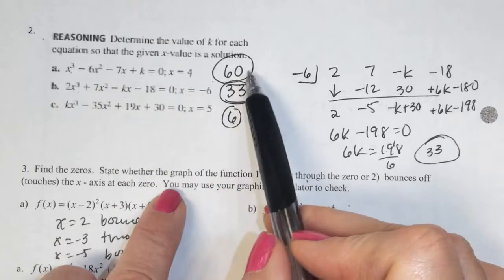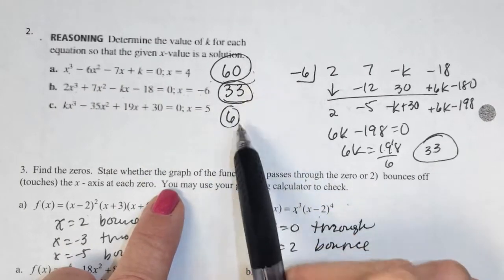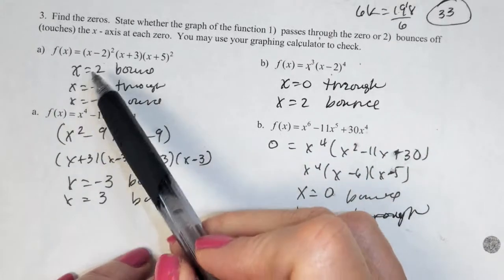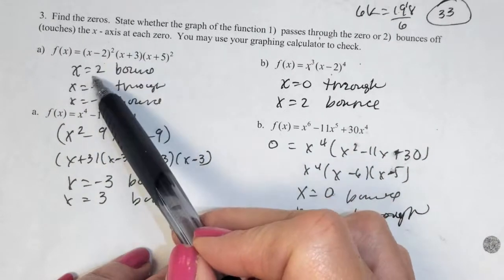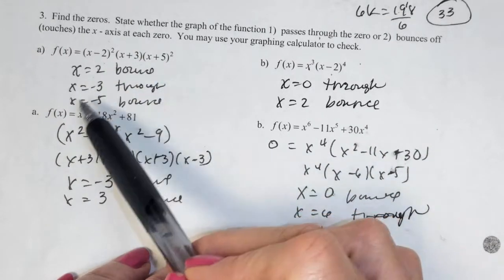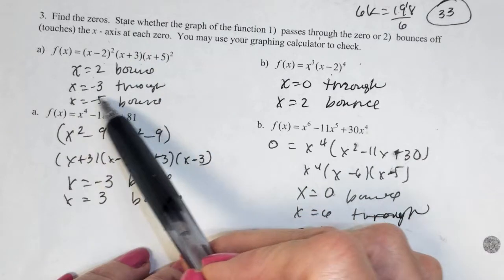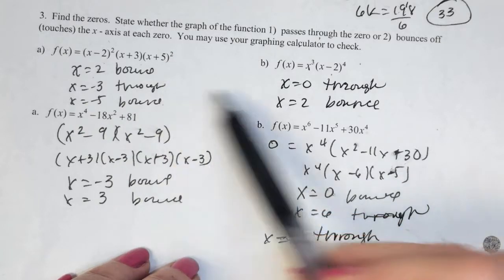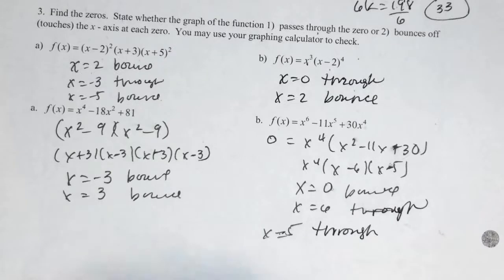Number 2: A should have been 60, B was 33, C was 6. Number 3: x = 2 has multiplicity 2, so it's a bounce. x = -3 went through because multiplicity is odd. x = -5 has multiplicity 2, so that's also a bounce. Check your answers on the rest of those.